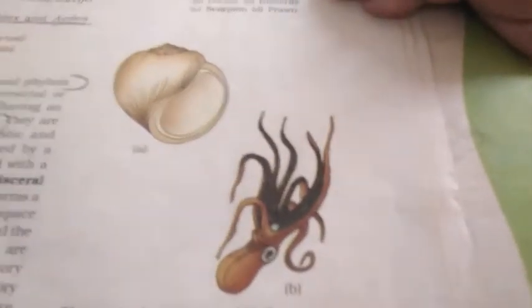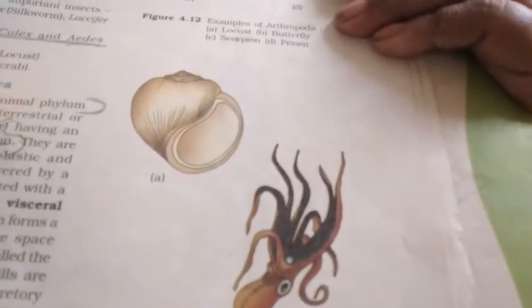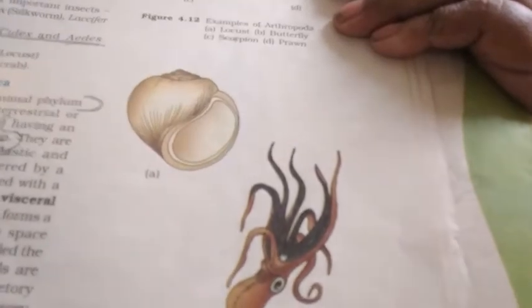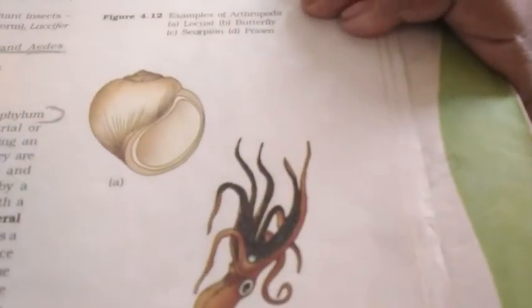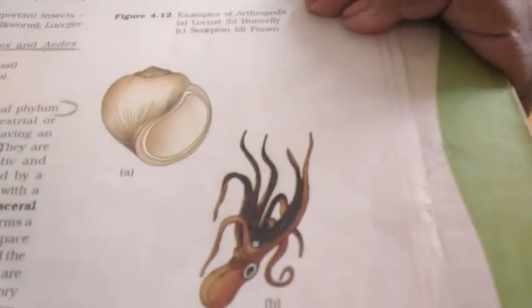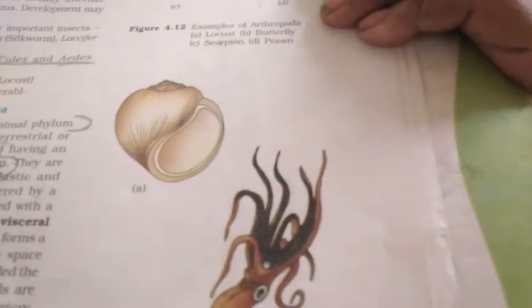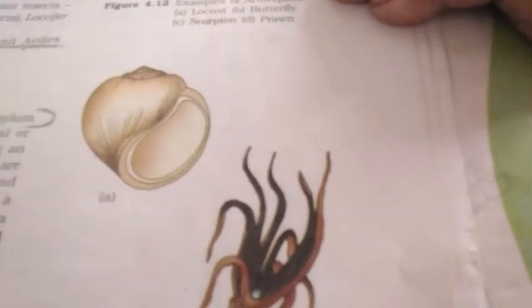A question may arise: they have open type of circulatory system and they don't have hemoglobin. How are they advanced over the annelids? They have distinct head and much better sense organs and gills or lungs for respiration. How are they more advanced than the annelids?